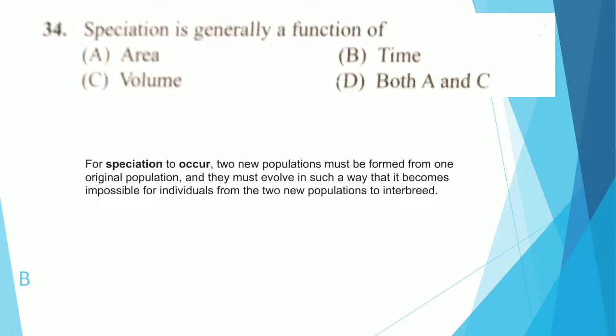Speciation is generally a function of time because speciation occurs when two new populations are formed from one original population, and they must diverge in such a way that interbreeding becomes impossible. One species must come from the original, like from mother to child, continuing across time. Since reproduction has a proper particular time, speciation is a function of time — answer is B.